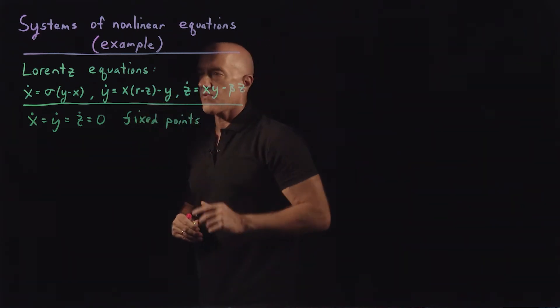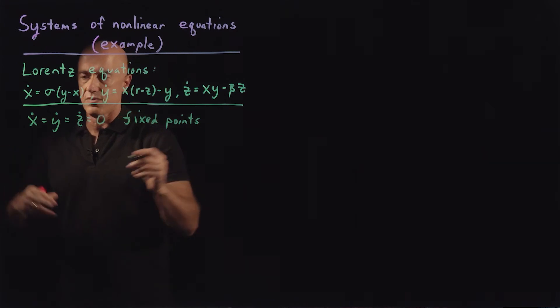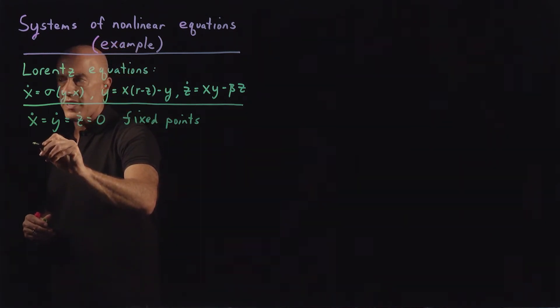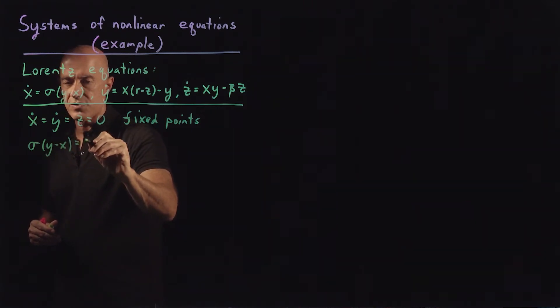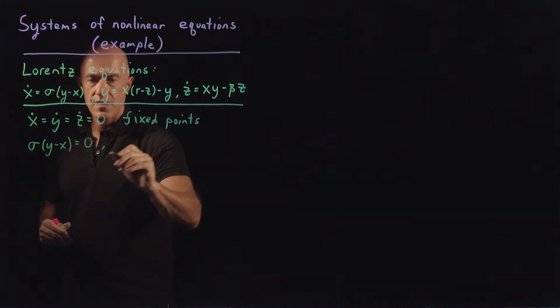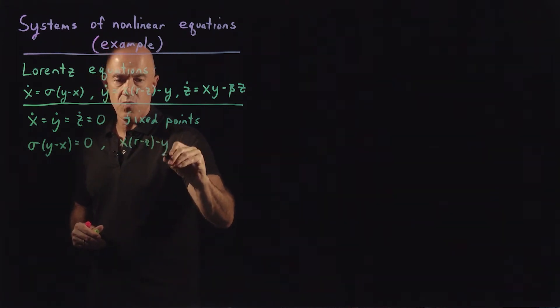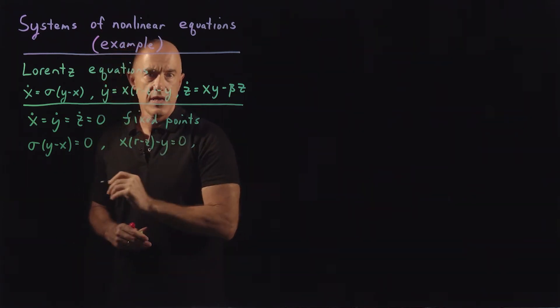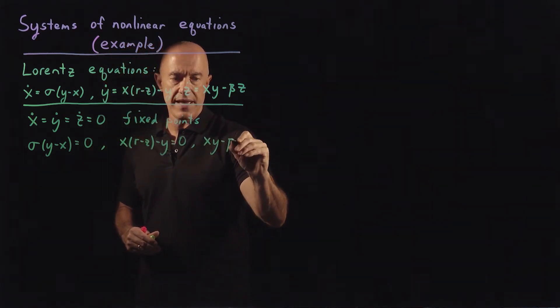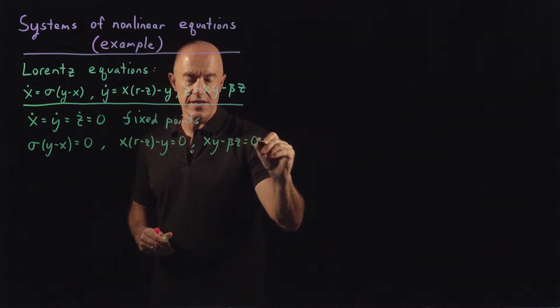So we have three equations. I'm just going to do this without simplifying. So we have sigma(y minus x) equals zero. We have x(r minus z) minus y equals zero and we have xy minus beta z equals zero.